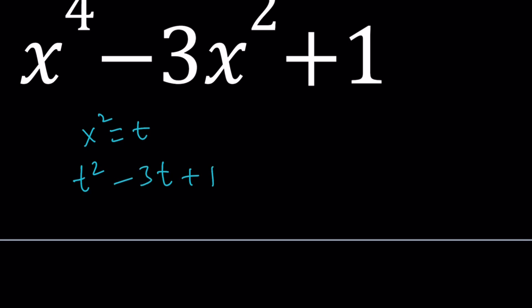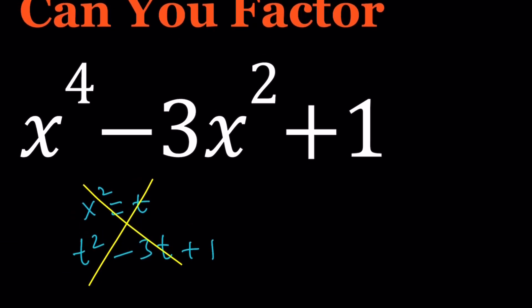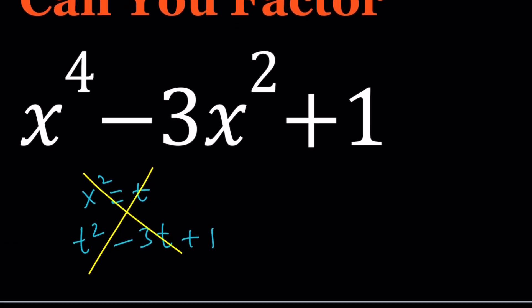So this method, unfortunately, is not going to work on this quartic. So we have to do something else. What is that? And that is taking advantage of difference of two squares in a different way. So notice that this expression starts with x to the fourth and ends with 1. So now, my goal is to complete the square.